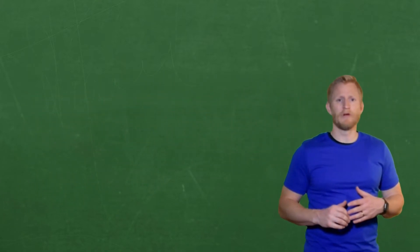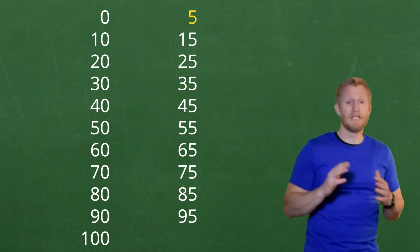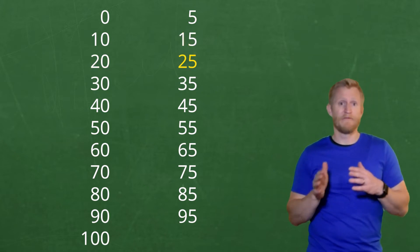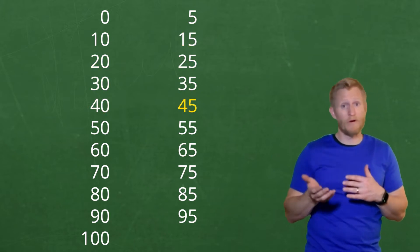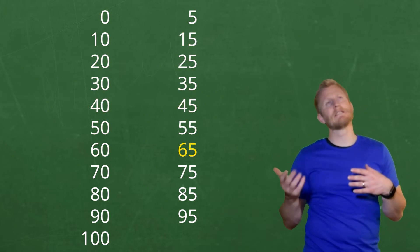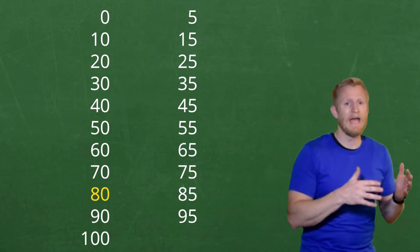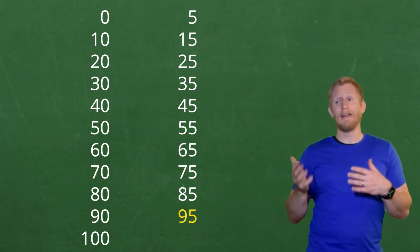Skip counting by fives will give us zero, five, 10, 15, 20, 25, 30, 35, 40, 45, 50, 55, 60, 65, 70, 75, 80, 85, 90, 95, 100.